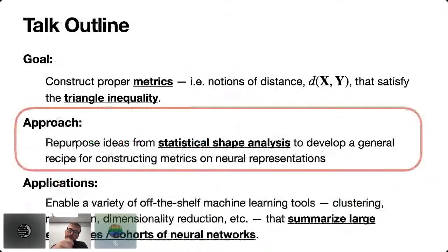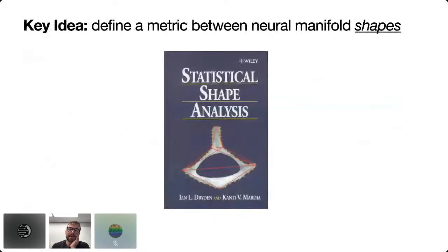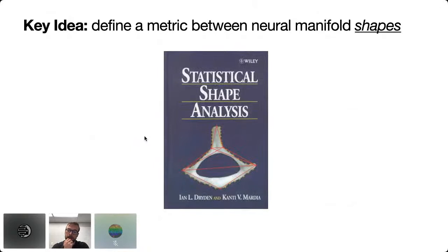We're going to borrow many ideas from statistical shape analysis, a field several decades old, with connections not yet recognized in neuroscience or machine learning. I point to the textbook by Dryden and Mardia, which covers these fundamental ideas in detail. Most applications in that book compare shapes in 2D or 3D, but all these ideas extend naturally into higher-dimensional shape spaces — which is what we'll use for neural representations.